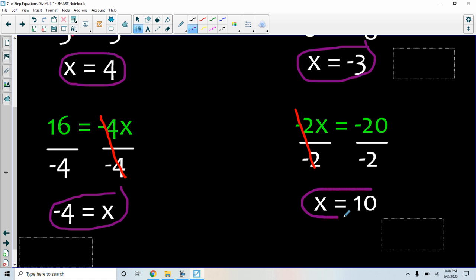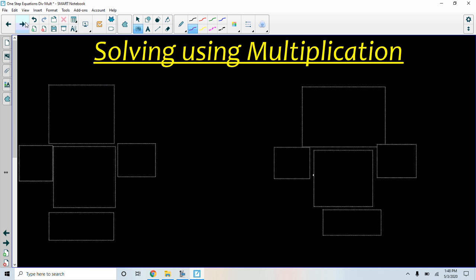So we just do one thing, we divide on both sides, and then the equation is solved. Let's try solving using multiplication. In this problem, I'm dividing x by 2.